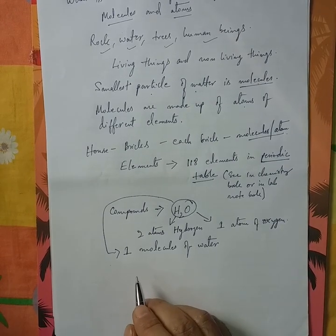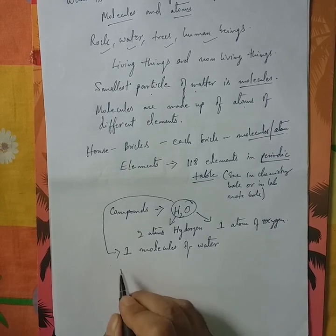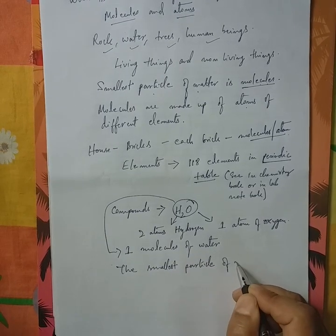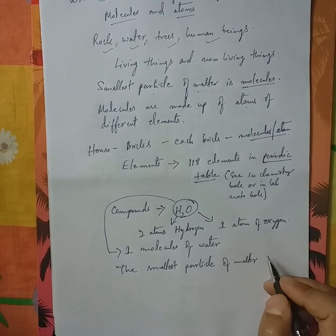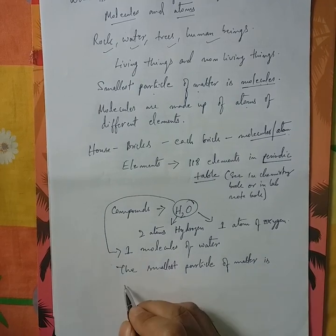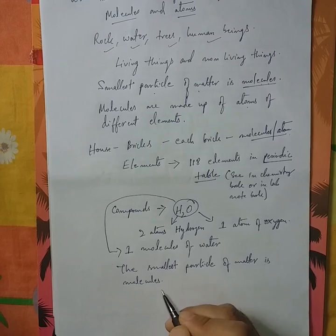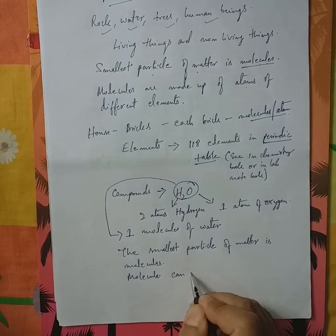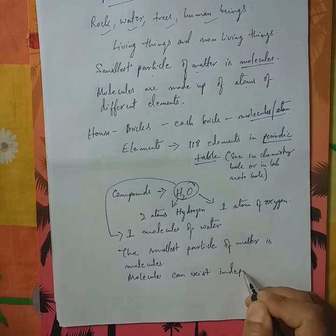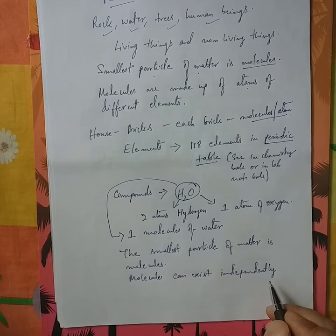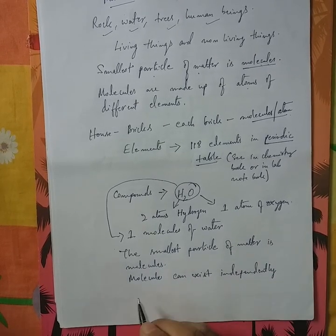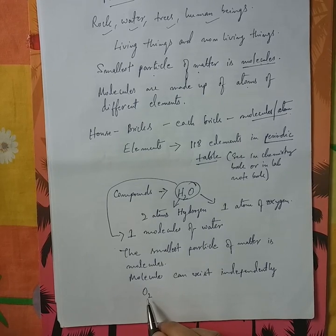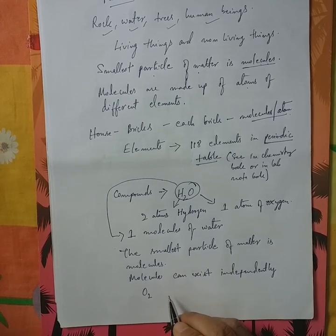Therefore, finally, we can say that the smallest particle of matter is molecule. This molecule can exist independently. Can exist independently means it exists free in nature, like oxygen gas. We get in this form in nature. Oxygen combines with different elements to form compounds.